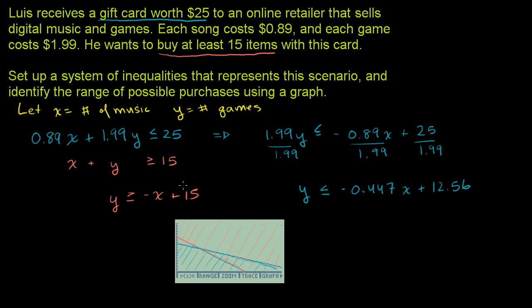The area that overlaps between these two constraints is below the blue line, including the blue line, and above the red line, including the red line. So any combination of games and music in that area will meet both of his constraints. And since you can't buy half a game or half a song, it would only be the integer coordinates in this region that would satisfy his constraints.